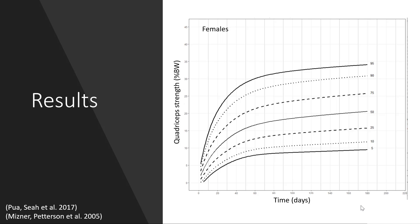Both male and female specific reference charts were created to model strength recovery over the first six post-operative months. Each line here represents the estimated recovery of a population centile over time, such as the 50th centile shown here. Therefore, when you plot a new patient's strength on the chart, you can determine how they are recovering relative to the population average at any time point.